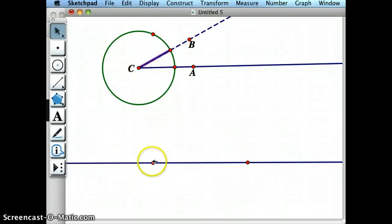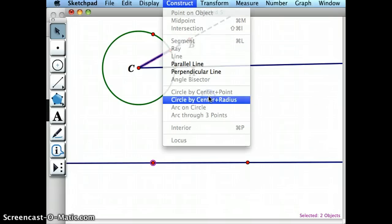Then I'm going to go down to where I want to copy this angle, click on this, make sure the segment is selected, and construct circle by center and radius.